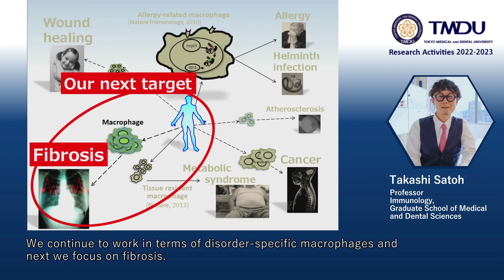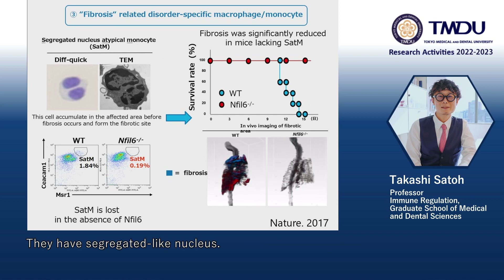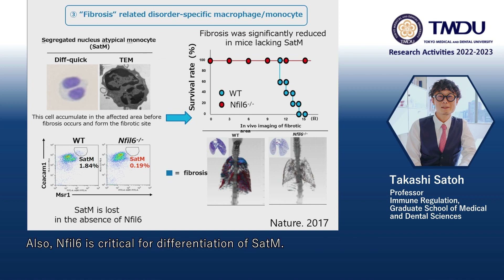We continue to work on disorder-specific macrophages, and next we focused on fibrosis. We found an atypical monocyte involved in fibrosis development. They have a segregated-like nucleus, so we named this segregated nucleus atypical monocyte SAT-M. Also, NFIL-6 is critical for differentiation of SAT-M. Fibrosis was significantly reduced in mice lacking SAT-M. Therefore, we found that this cell type is fundamental for fibrosis development.